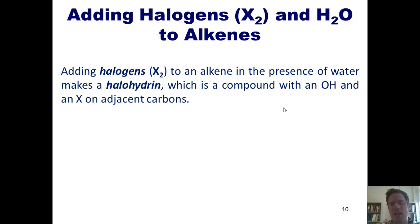Now, in the previous example, I stated that that type of outcome occurs when we take a halogen and add it not in the presence of water. So what happens if we add it in the presence of water? Well, it turns out, if you add halogens to an alkene in the presence of water, it makes something called a halohydrin, which is basically a compound that has an OH on one carbon and an X on the adjacent carbon.